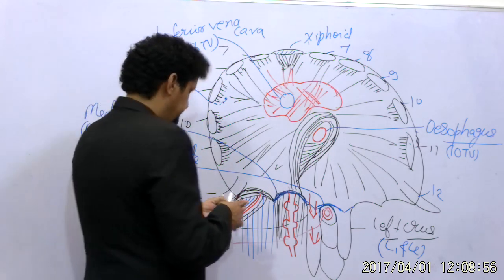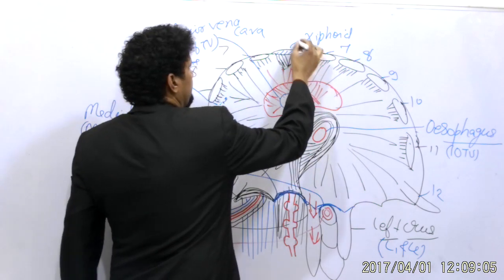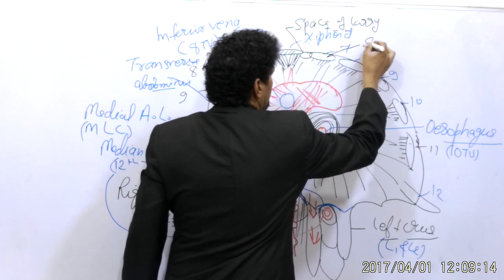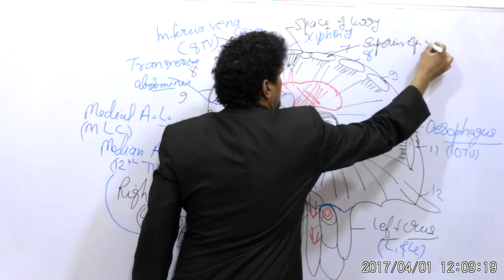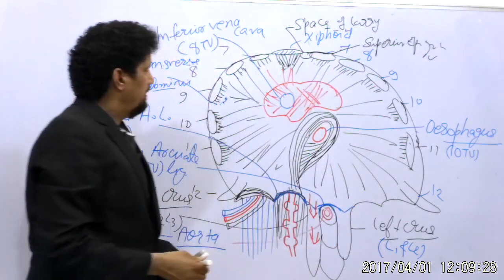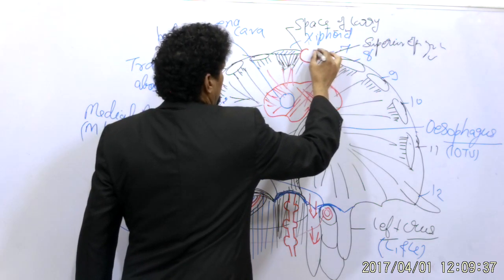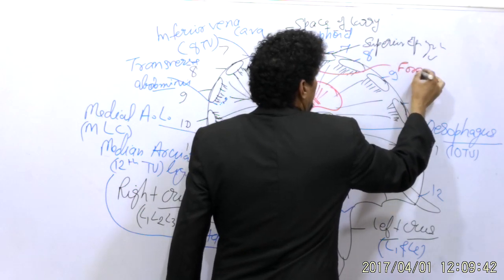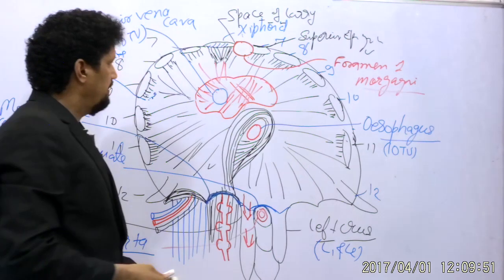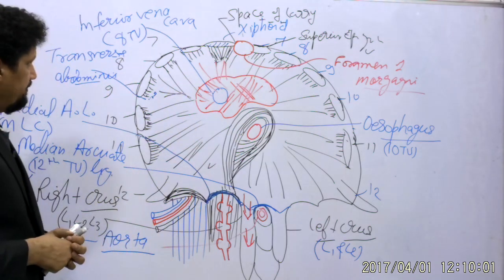Besides the major openings, there are smaller openings. There is a gap between the xiphoid and the costal cartilage known as the space of Larrey, which allows the superior epigastric vessels. When this space is enlarged, it is known as the foramen of Morgagni. This can sometimes lead to herniation of abdominal organs into the thoracic cavity.